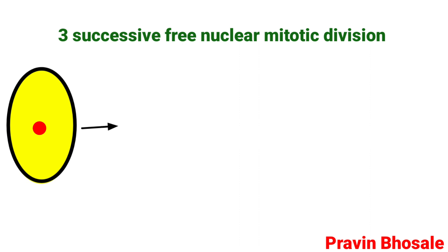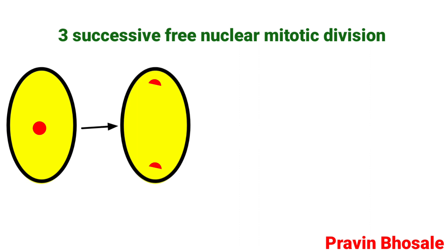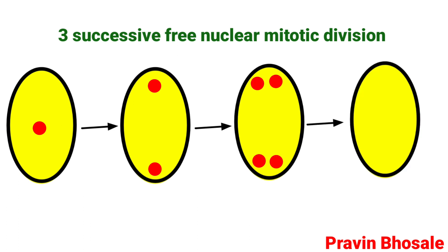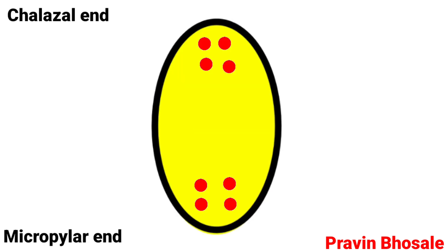After the first mitotic division, it forms two nuclei. The two nuclei undergo a second mitotic division to form four nuclei. The four nuclei undergo a third mitotic division and form eight nuclei.